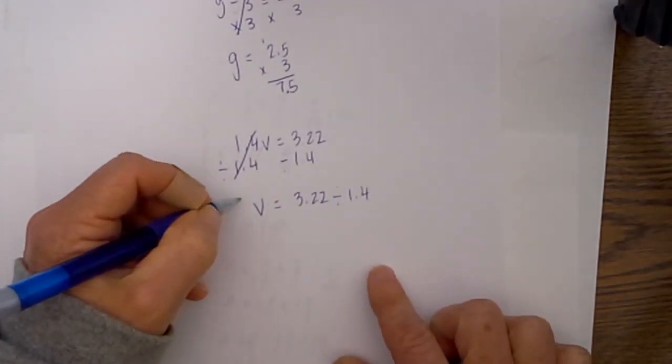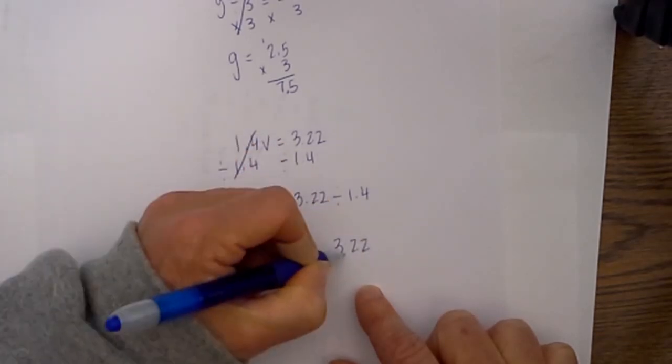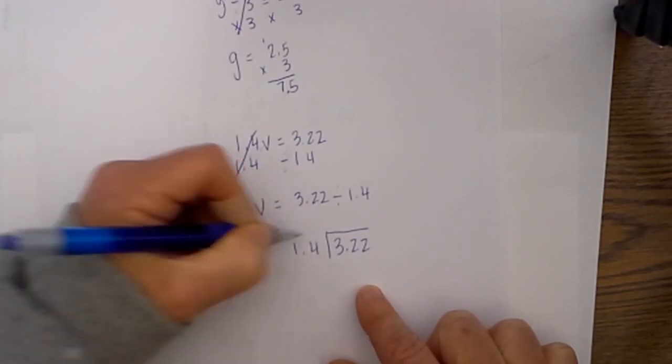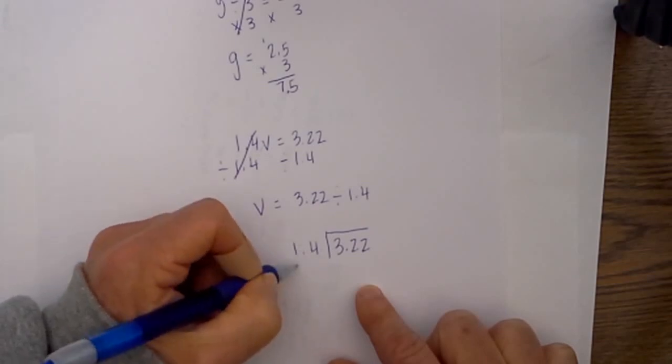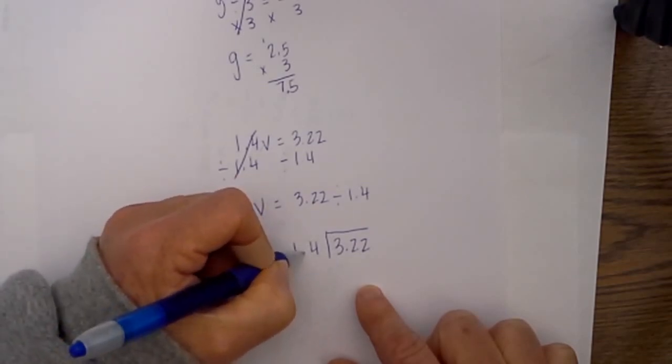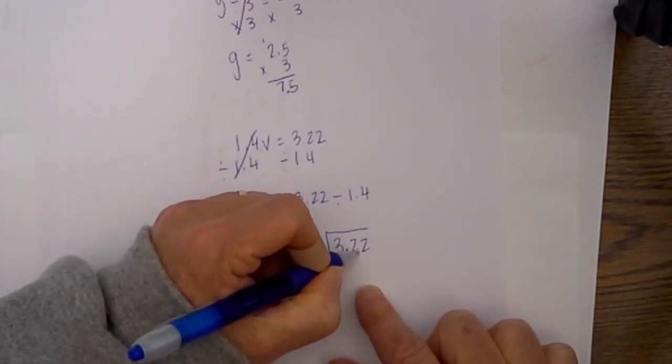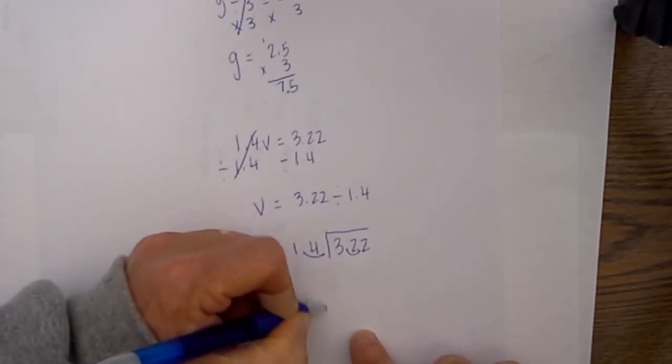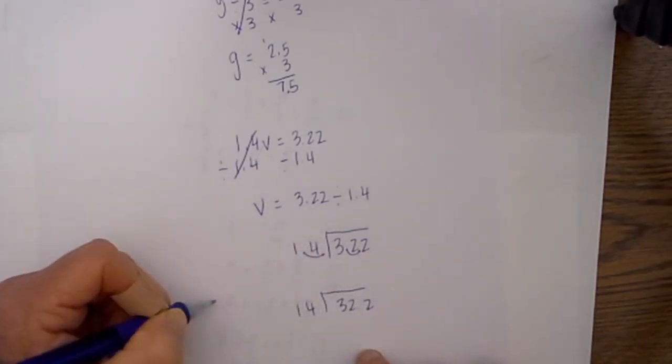Now when you divide decimals what I do is I go ahead and put it in the doghouse, so I have 3.22 inside the doghouse and 1.4 on the outside. Then I move the decimal to where it does not have a decimal at all, so I will move it one place to the right so that becomes 14, and I will move the decimal one place to the right on the inside. So I am left with 32.2 divided by 14.